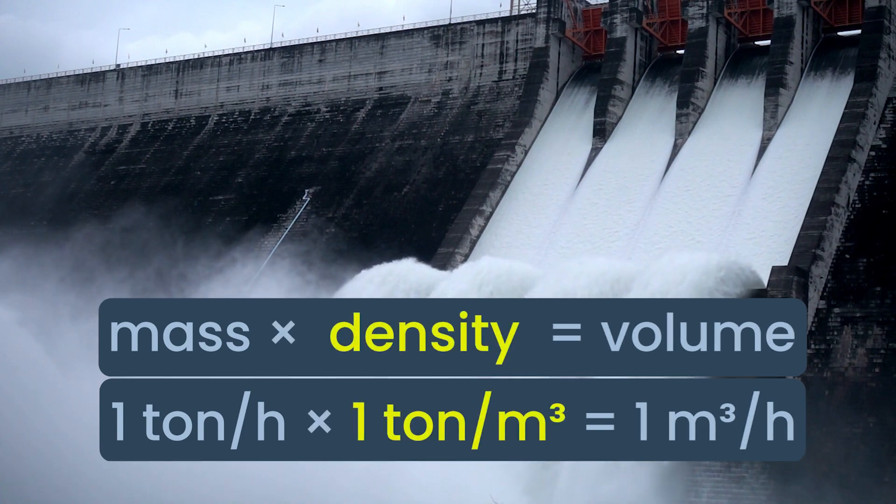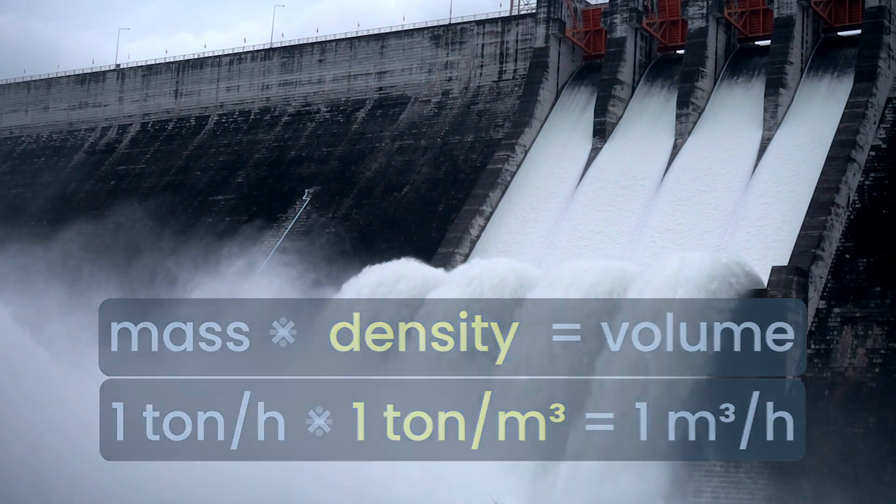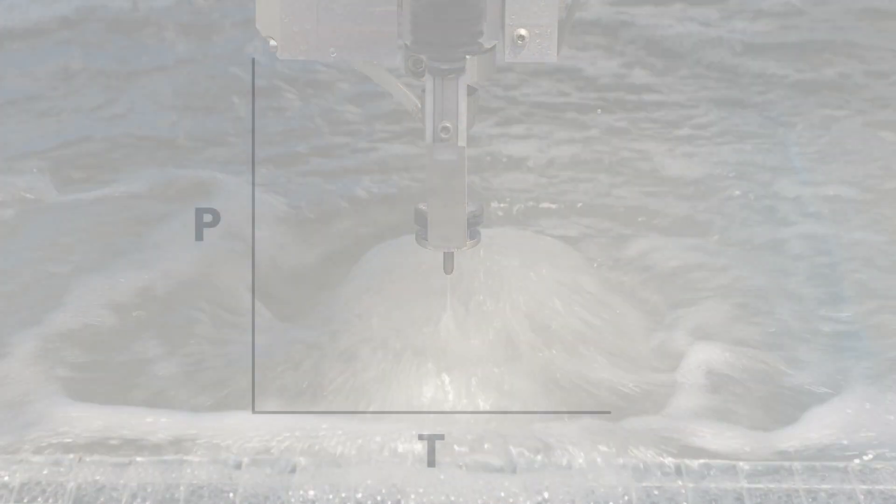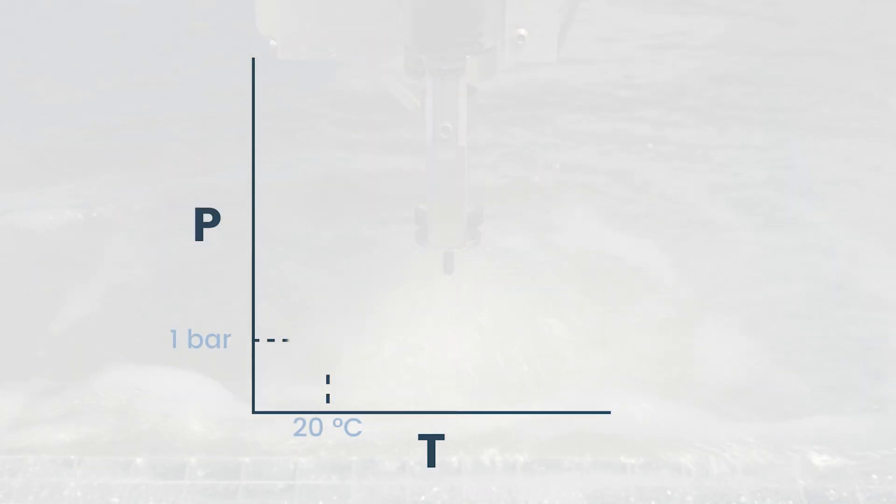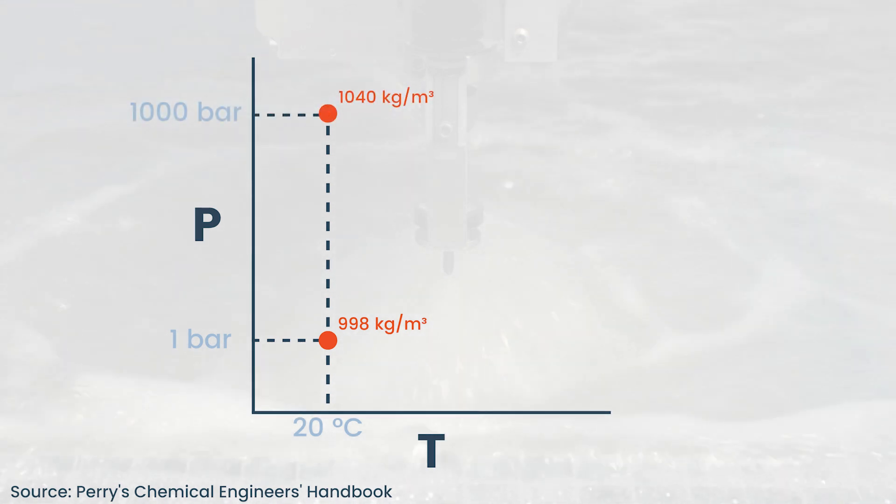Liquid density doesn't vary much with temperature and pressure. If I have water at 1 bar and 20 celsius it has a density of 998 kilograms per cubic meter. If you took that water and compressed it all the way to 1000 bar, the density would increase to 1040 kilograms per cubic meter.